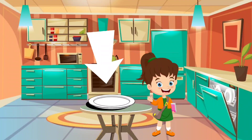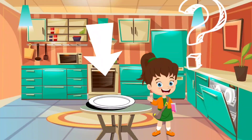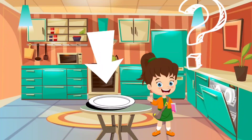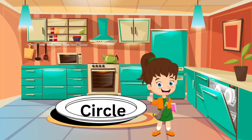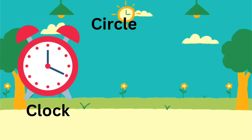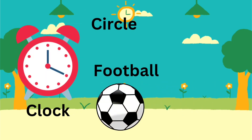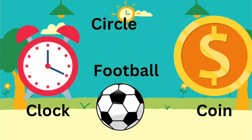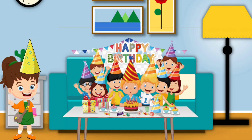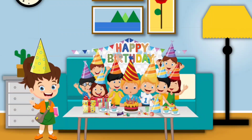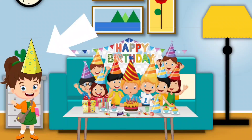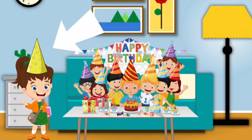Hi, we are in my kitchen. Look, there is a plate on the table. What shape is it? Yes, it's a circle shape. Some examples: clock, football, coin. These all are circle shapes.